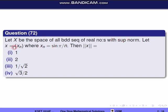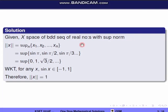We define x as sequence xn, and we have norm x value. So norm x is equal to supremum norm, that is equal to supremum over n of the set {x1, x2, ..., xn}. We define xn as sin(π/n). So x1 is sin(π/1), x2 is sin(π/2), x3 is sin(π/3), etc.